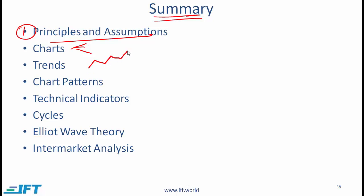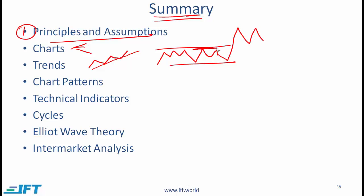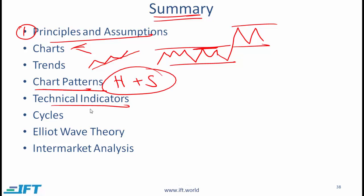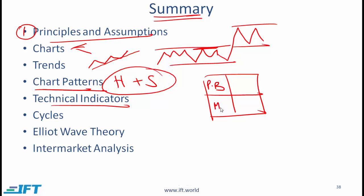We talked about uptrends, where the trend line connects the lows, and downtrends. We have the concepts of support and resistance — resistance is the upper line, support is the lower — and a change in polarity where old resistance may become new support. We covered chart patterns including continuation patterns and reversal patterns, the most important being the head and shoulders pattern. We also covered four kinds of technical indicators: price-based, momentum oscillators, sentiment-based, and flow of funds-based indicators.